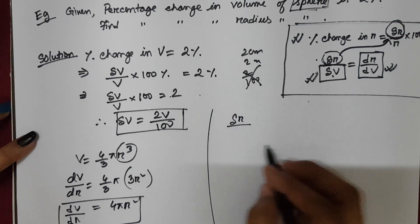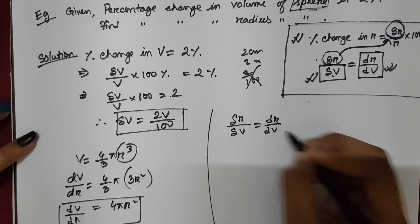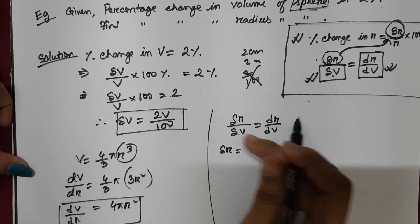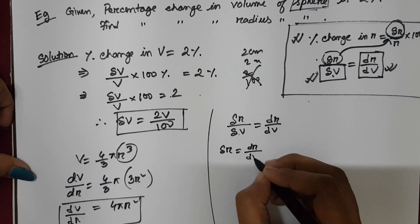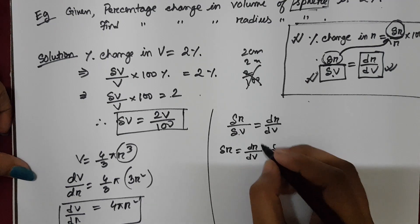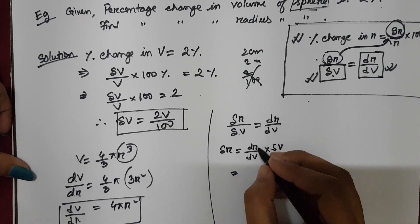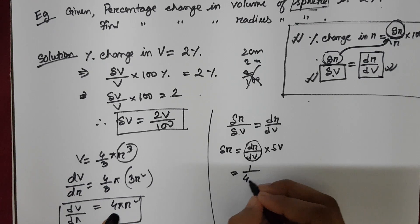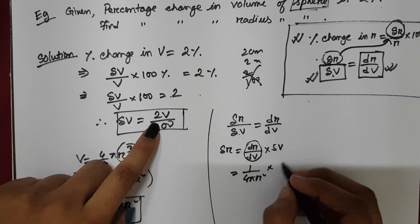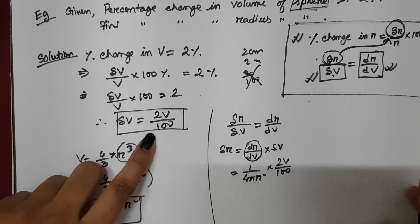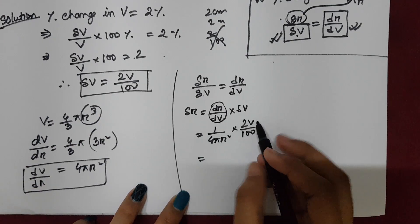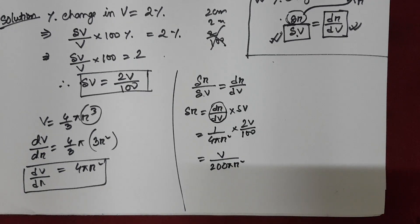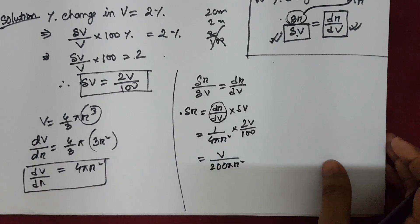Now substituting into the equation: del r by del v equals dr by dv. To get del r, take del v to the other side: del r equals dr by dv multiplied by del v. Since dr by dv is the reciprocal of dv by dr, it equals 1 by 4 pi r squared. Multiplying by del v, which is 2v by 100, we get del r equals v by 200 pi r squared.